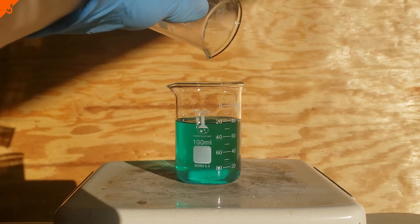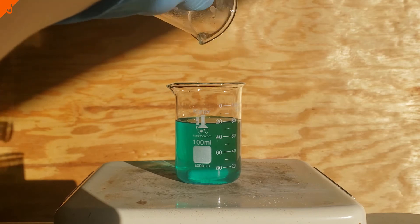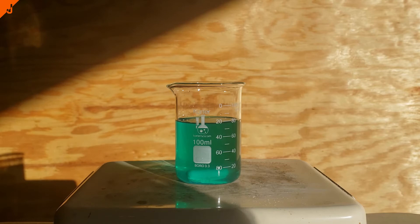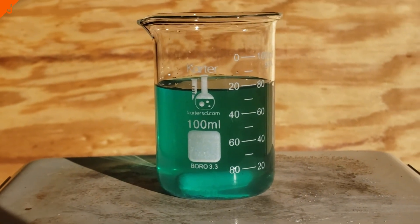Once everything was added, you can clearly see the vivid, bluish-green color of the copper-2-bromide in solution. The interesting thing about copper bromide is that the color it is when it's a solid is completely different from that when it's in solution.